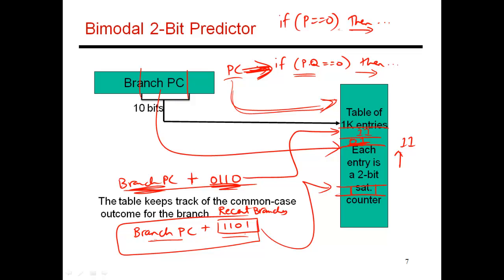For this one given branch, there are 12 possible recent histories, and there's a separate entry for each of those. And each entry tells me what is the common outcome for the branch with this particular input. For this branch, for this recent history, what does this branch tend to do? And I'll make a prediction based on that recent history. So this is what a global predictor is.